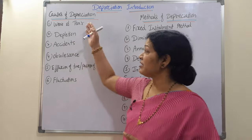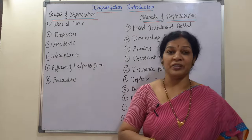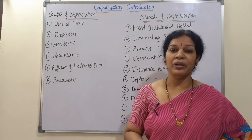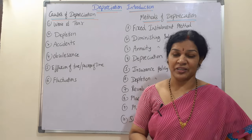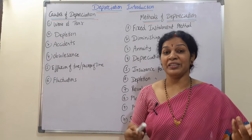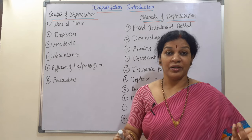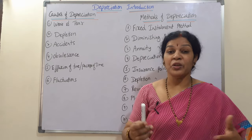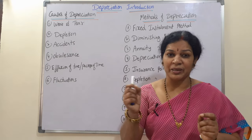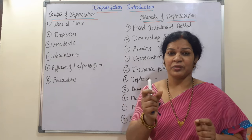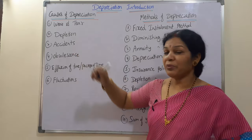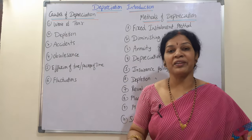What are the main reasons or causes of depreciation? The first one is wear and tear — consistent usage gradually brings the value down. The second one is depletion, which is applicable to coal mines, oils, and petrol. Whenever we extract these from the earth, some material is lost and its value decreases — that is called depletion.